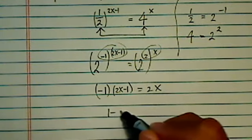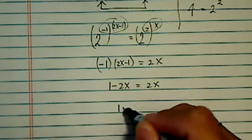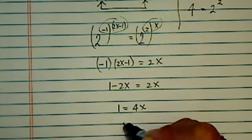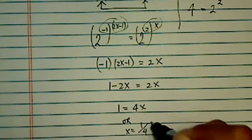So then I have 1 minus 2x is equal to 2x. That's a pretty easy one to solve. From there, 1 is equal to 4x, or x is equal to 1/4.